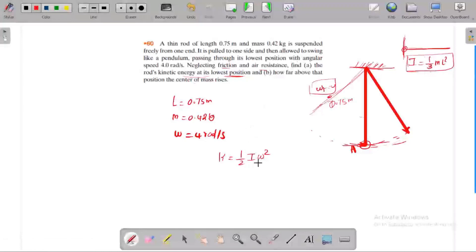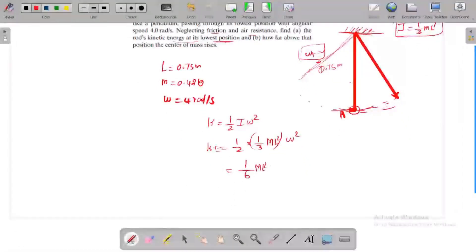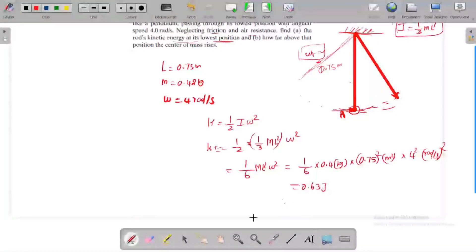We have the formula so replace the values. Kinetic energy is one by six m L squared omega squared. The omega value at the bottom is 4 radians per second. Substitute the values: mass is 0.42 kg, length is 0.75 m squared, omega is 4 squared radians per second. By doing the calculation we get 0.63 joules.